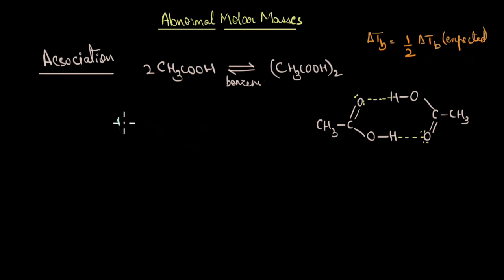Experimentally, you will get the molar mass of acetic acid as a molar mass value of the dimer, which is about 120 grams per mole. But the actual molar mass value of acetic acid is only half of it.